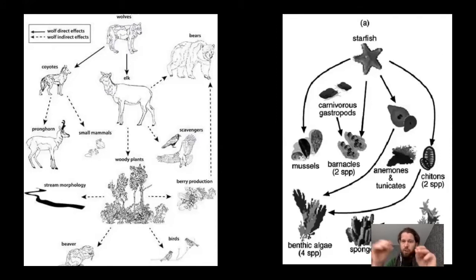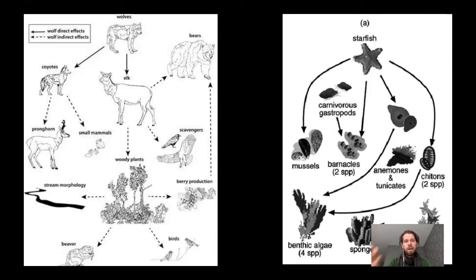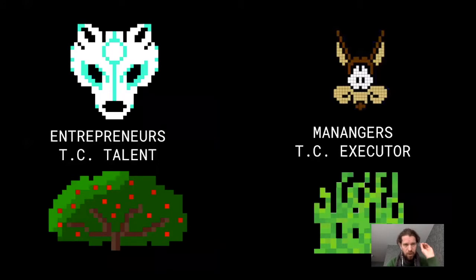In that maritime ecosystem, you add starfish, which can open mussels and eat them, reducing that population. You see a trophic cascade eventually leading to algae, which is the essential variable in the maritime environment, creating a whole enrichment. Both wolves and starfish are keystone species. I'm going to focus more on wolves and woody plants because it relates to things we see in lean agile communities, specifically towards open innovation. You can see the wolves as the entrepreneurs and the woody plant as the talent.